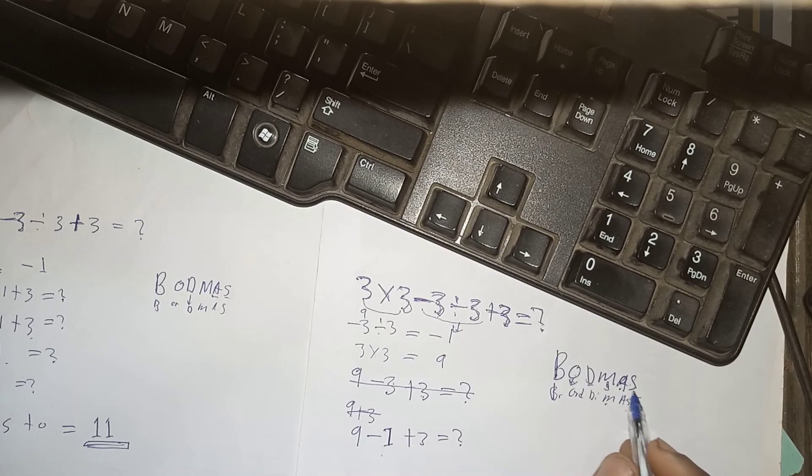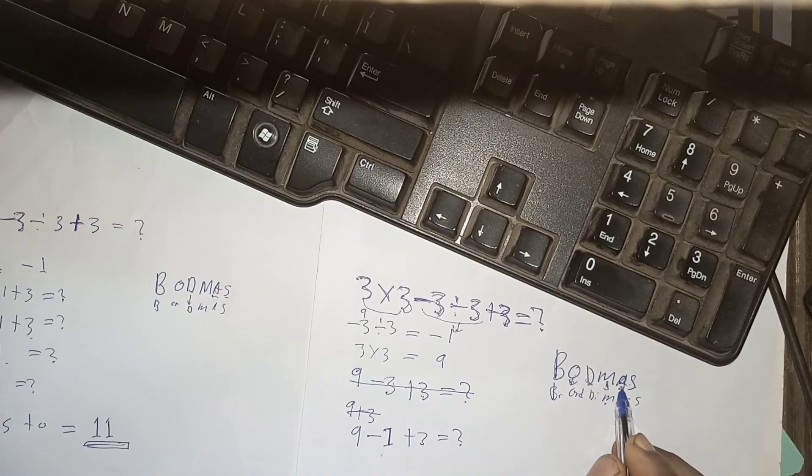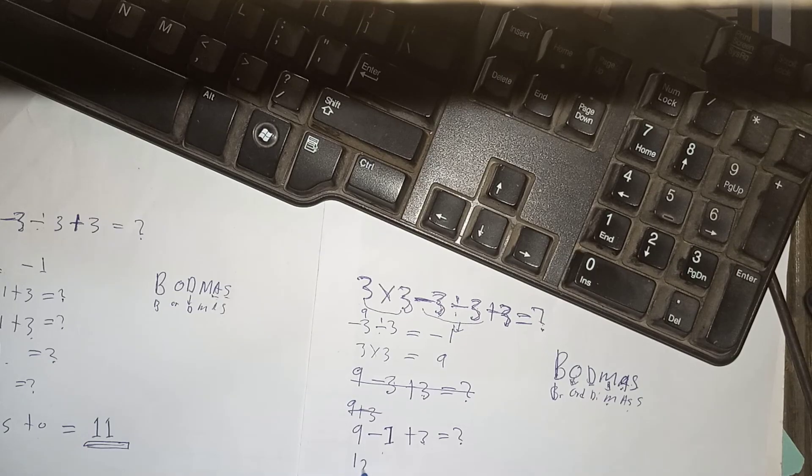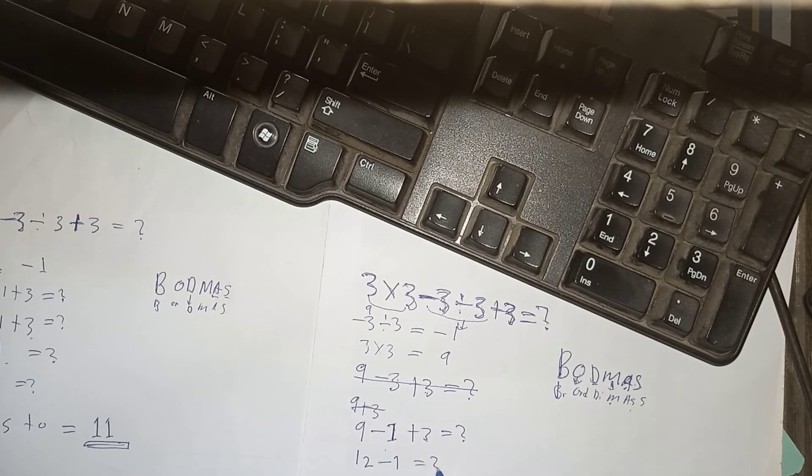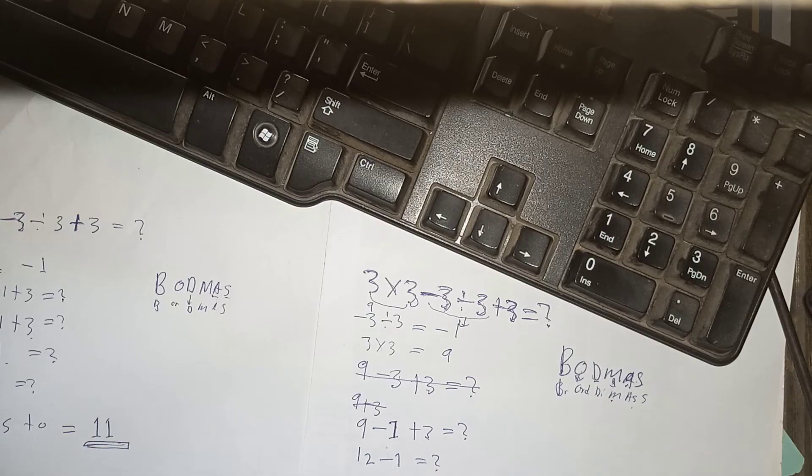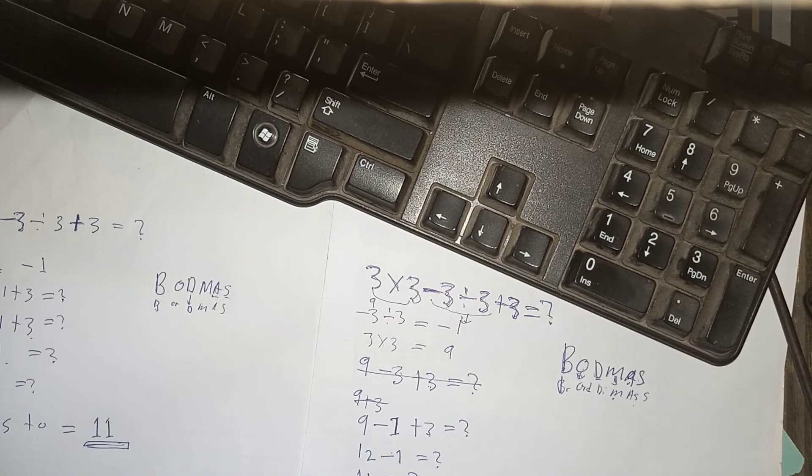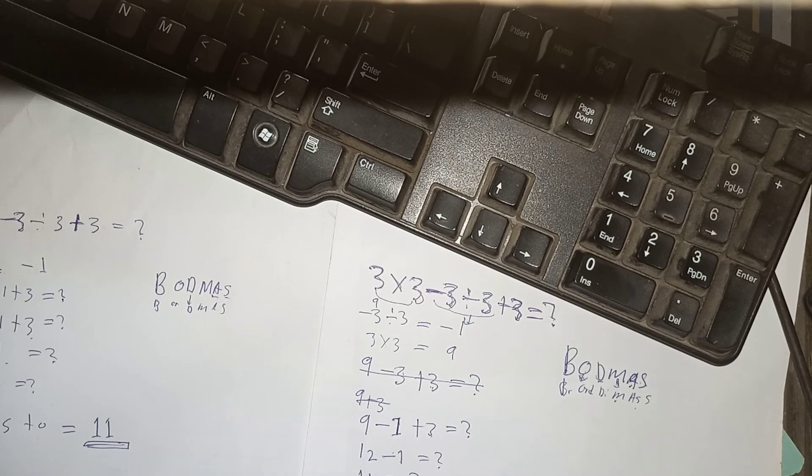Then, the next thing we are going to do is addition. So, 9 plus 3 is 12. Minus this 1 is equals. 12 minus 1 is 11. Therefore, the answer to this trending math quiz is 3 times 3 minus 3 divided by 3 plus 3 is equal to 11.